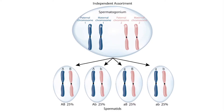This is a figure of independent assortment, which can be found in section 3 of genetics. Notice from the figure that this is a spermatogonium and that the cells shown below are spermatids. In males, spermatogonia divide through meiosis to become spermatids with half of the genetic information. Eventually the spermatids fuse with an oocyte and form a zygote. Although this image is showing independent assortment in males, the same process also occurs in females.